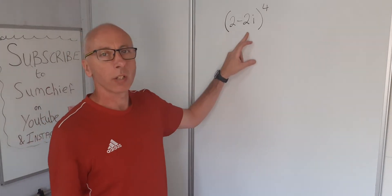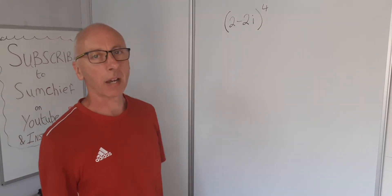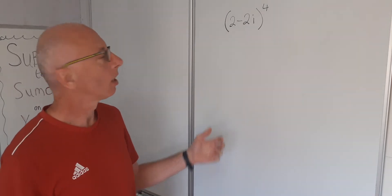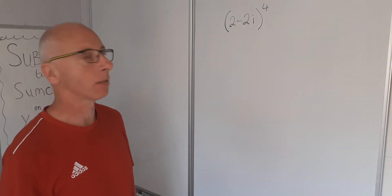Okay, so we're looking for 2 minus 2i to the power of 4. This is complex analysis and algebra, multiplying out and foiling these brackets.